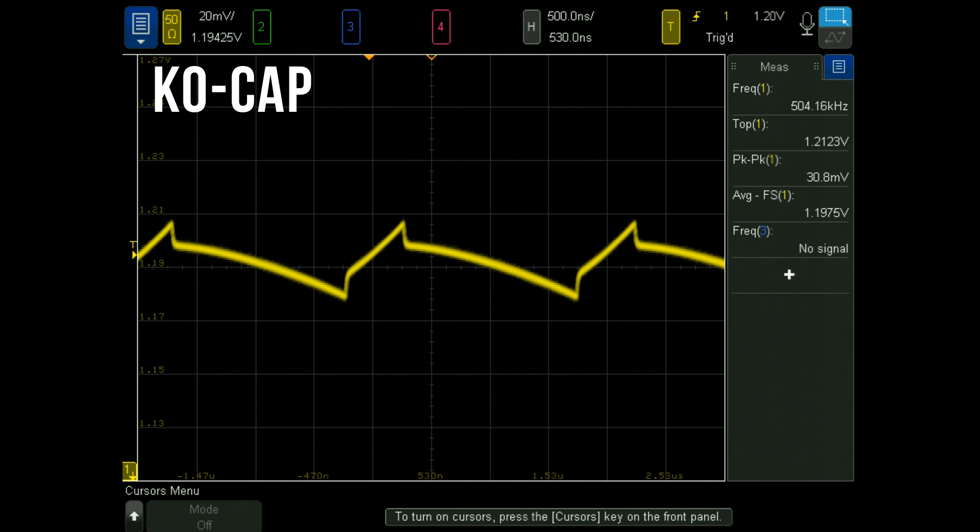The KO capacitor is a solid electrolytic capacitor with a conductive polymer cathode. The KO cap has a 30.8 millivolt peak-to-peak voltage with a more pronounced triangle wave output.